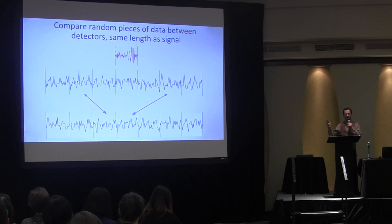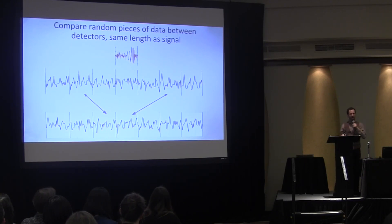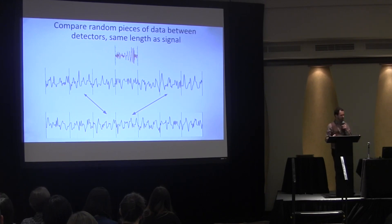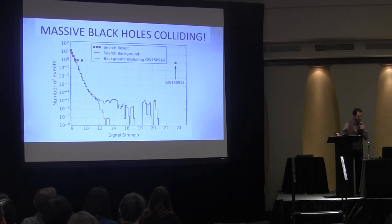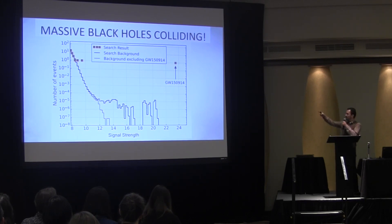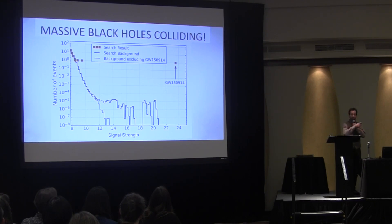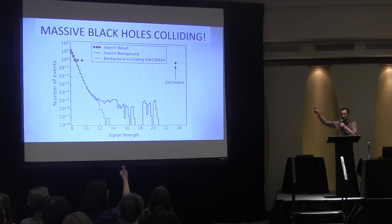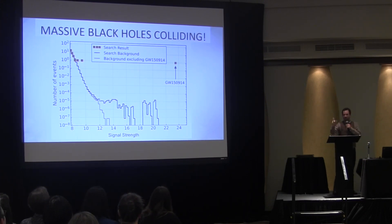Resampling. We take data from each detector, a random piece from random times, we align them, we ask does this look like a gravity wave? This gives us a probability of seeing a signal just by chance. And so there it is, my friends. That curve is the probability of seeing a signal at least that large just by chance — which we calculated without a single formula, by resampling. That dot up in the corner is massive black holes colliding. Is there anything resampling cannot do?